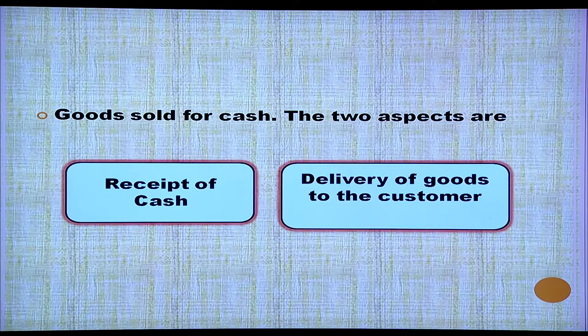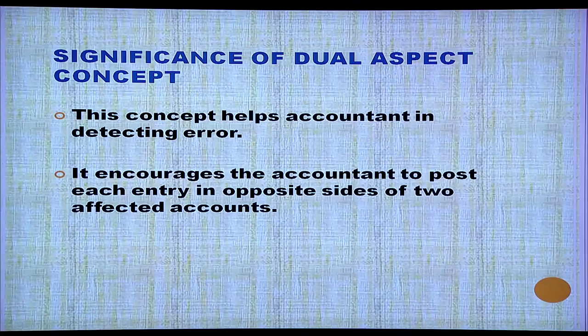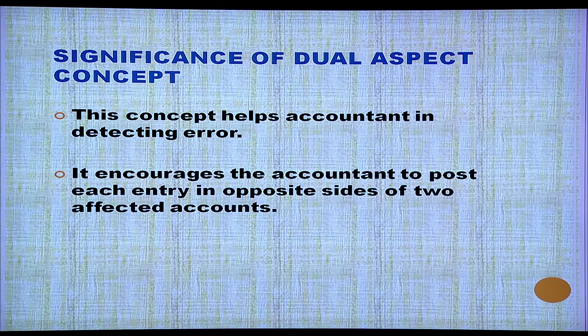Another transaction — goods sold for cash: receipt of cash is one aspect, and delivery of goods to the customer is the other aspect. Dual aspect concept helps the accountant in detecting errors and encourages posting each entry on opposite sides of two affected accounts.